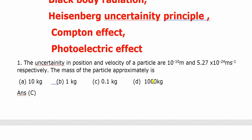Question number 1: The uncertainty in position and velocity of a particle are 10 power minus 10 meter and 5.27 times 10 power minus 24 meter per second. Find the mass of the particle approximately.